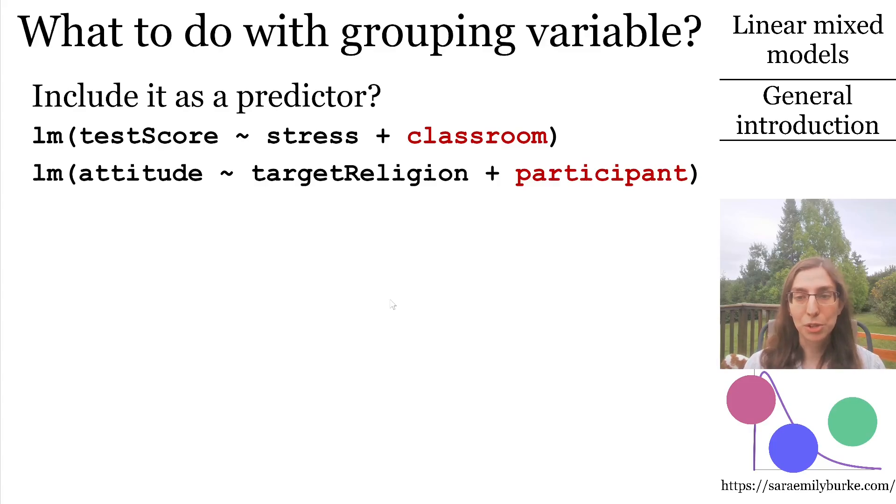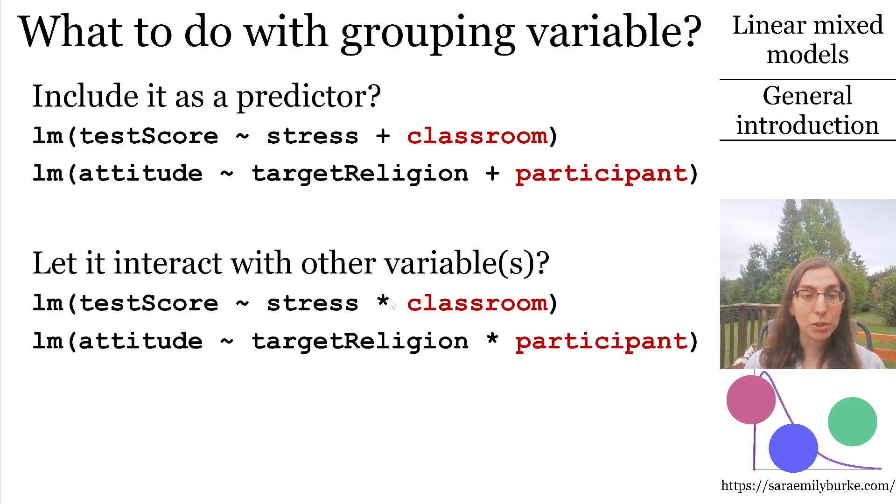In the example where each participant evaluated five religious groups, you could set up your data so that each rating was its own row, with a factor representing target group to distinguish the five rows that exist for each participant. Then you could introduce a factor representing participant to the model as an additional predictor. This factor would have one level for each participant.